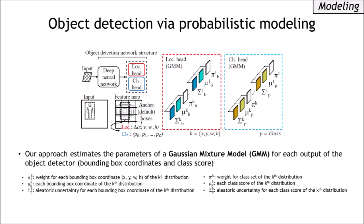This figure is an overview of the proposed object detection network. The main difference of our model with a conventional object detector is in the localization and classification heads. To predict the aleatoric and epistemic uncertainty of localization and classification tasks, we model each of the bounding box coordinates and class scores as the parameters of the Gaussian mixture model. There are three components: pi, mu, and sigma. Please refer to the description of the slide for the meaning of each parameter in the figure.